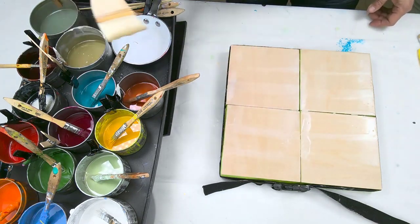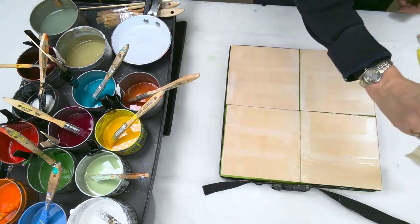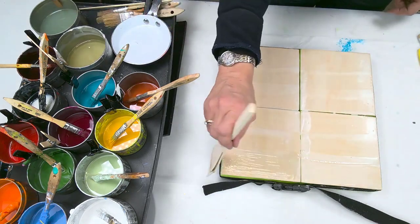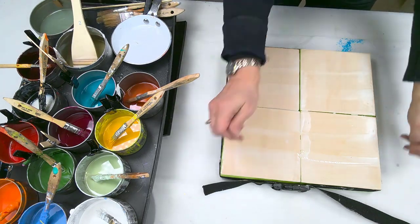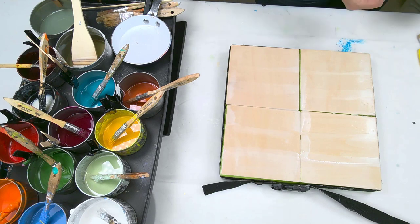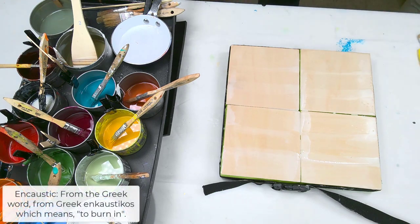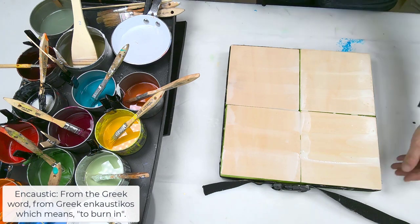So the first thing I'm doing is I'm coating it with encaustic medium, really just one layer to start with and then I'm going to heat it in. So the definition of encaustic is burning in. It comes from the word encausticos, a Greek term.